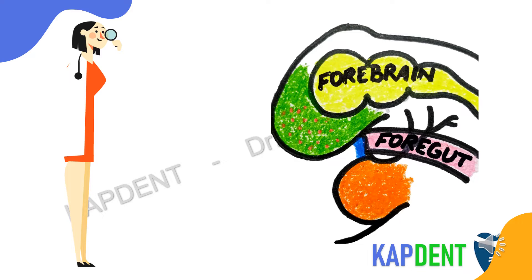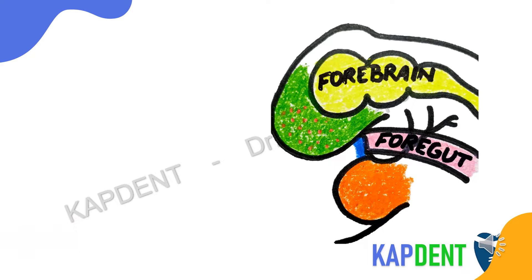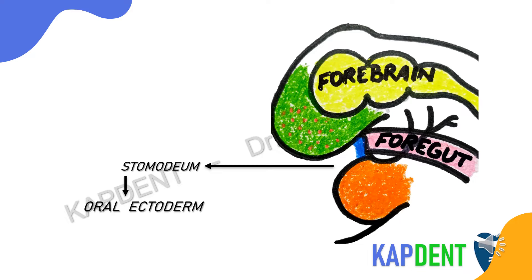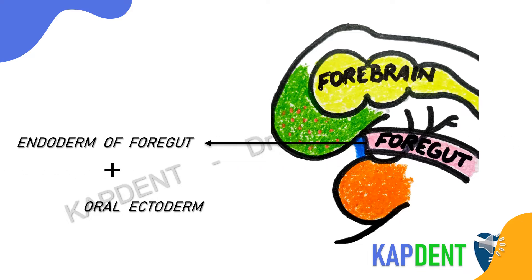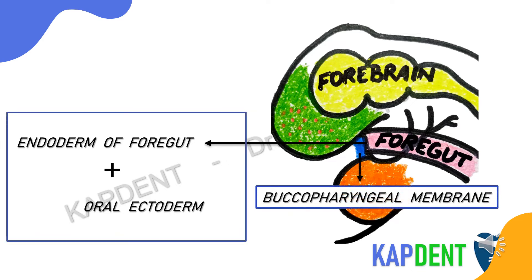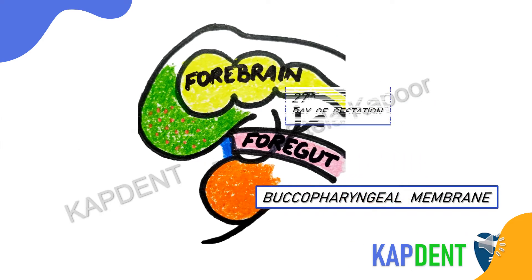Now, if you can recollect from a previous video, the diagram on the screen represents the cephalic portion of the fetus when viewed from the side. The pit that can be appreciated here is the stomodium, our primitive oral cavity, which is lined by stratified squamous epithelium called the primitive oral epithelium or the oral ectoderm. This oral ectoderm along with the endodermal foregut constitute the buccopharyngeal membrane, which ruptures at around the 27th day of gestation, establishing a connection between the stomodium and the foregut.